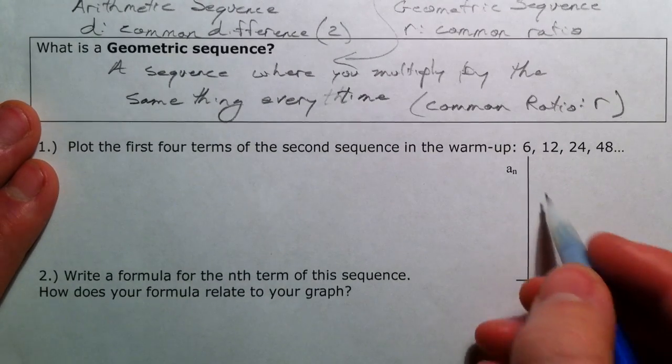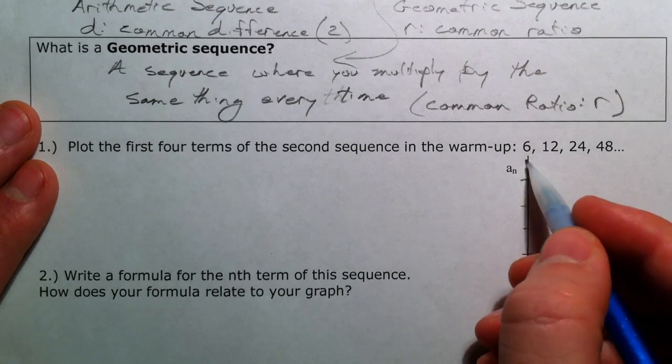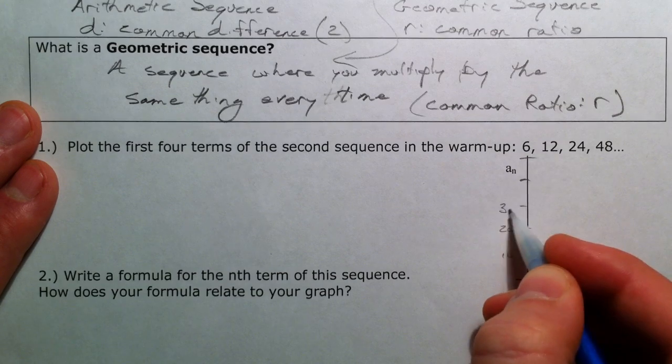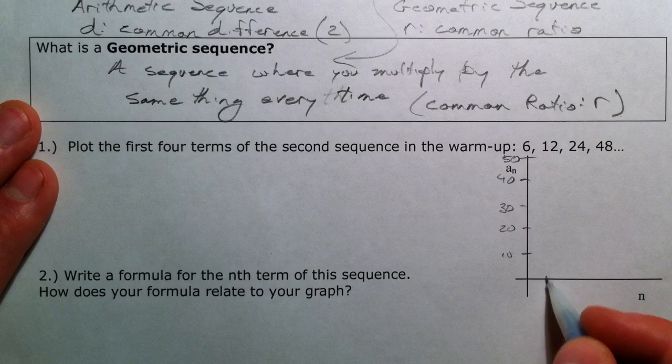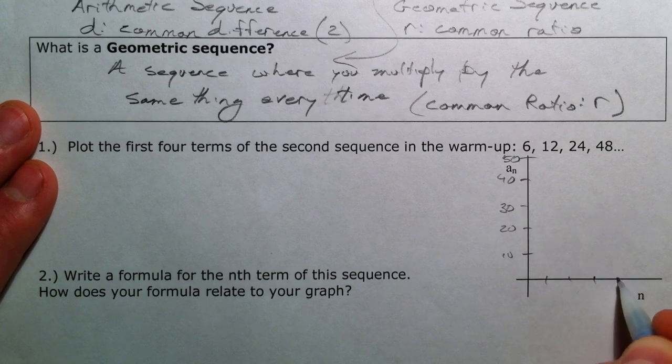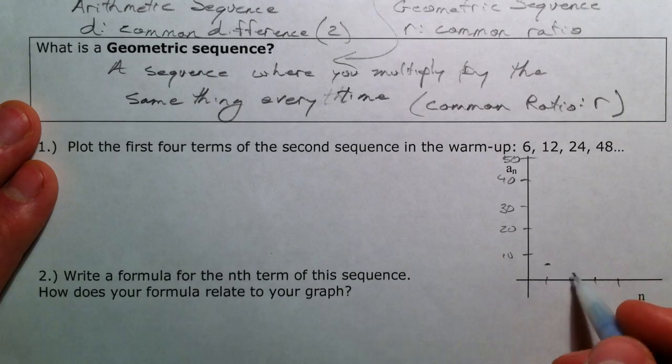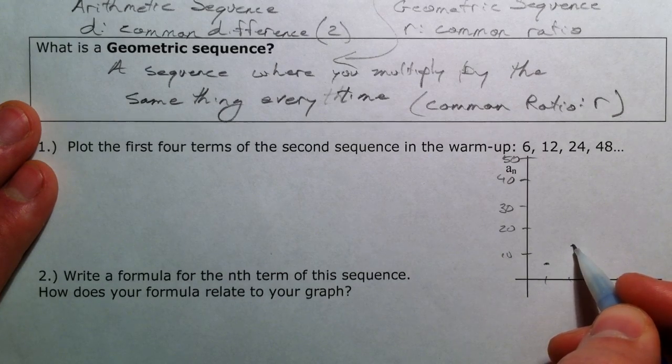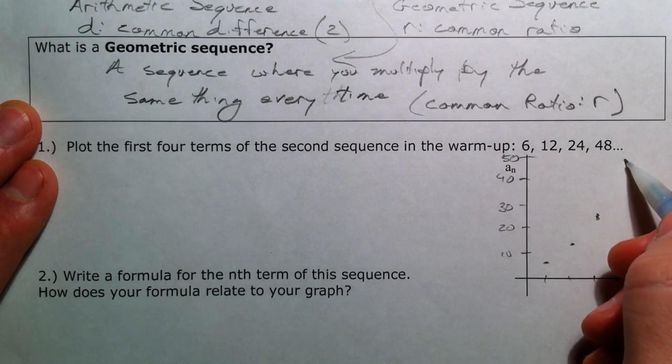So if we plot these terms: 10, 20, 30, 40, 50. We end up with 1, 2, 3, 4. So we have 6, 12, 24, and 48.